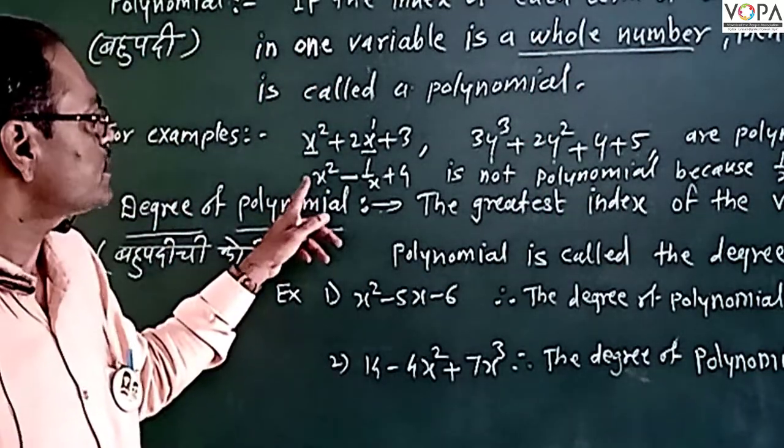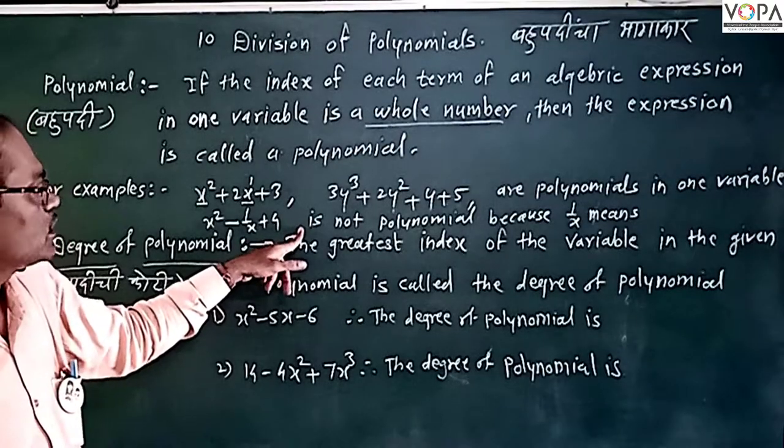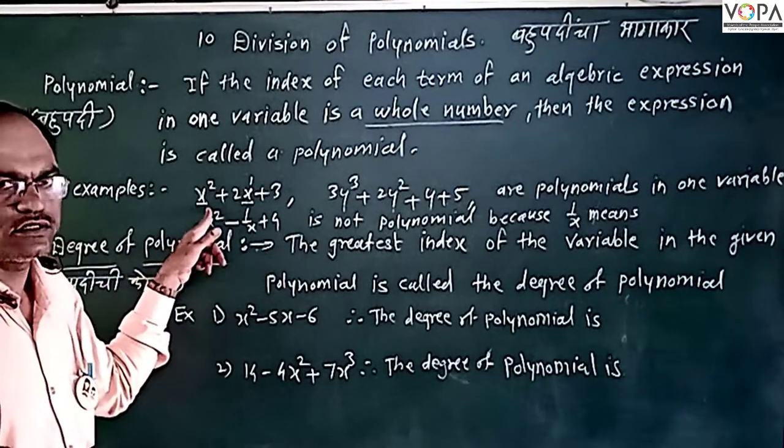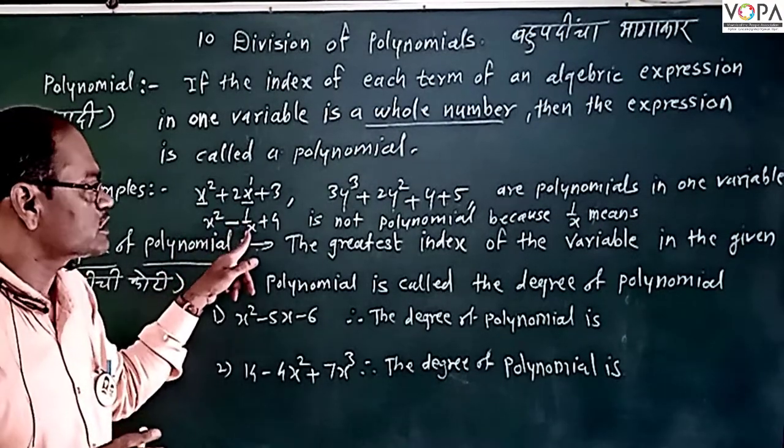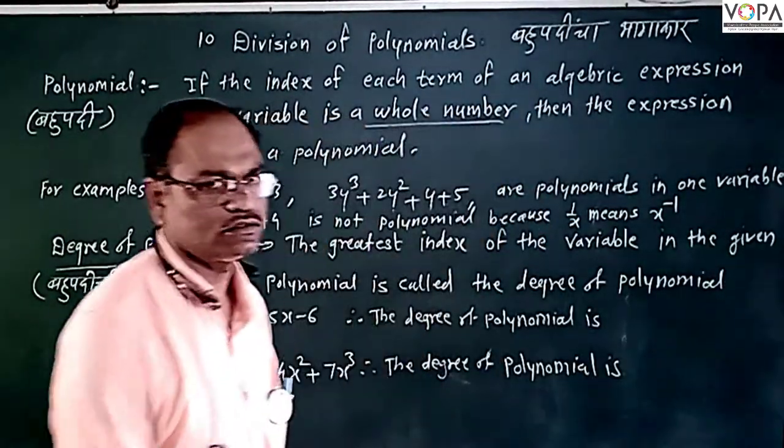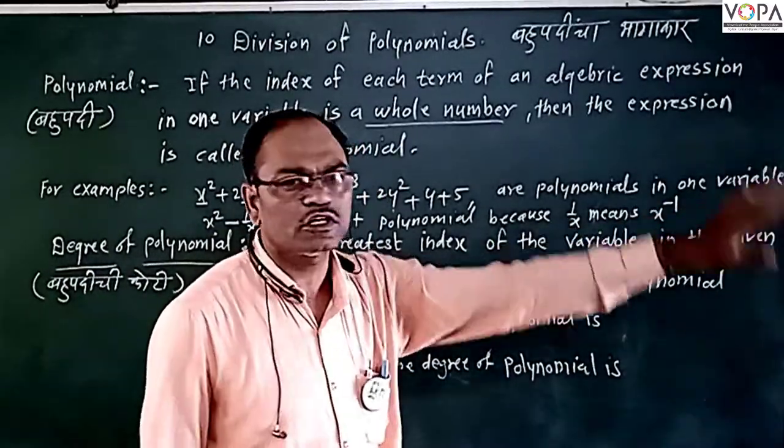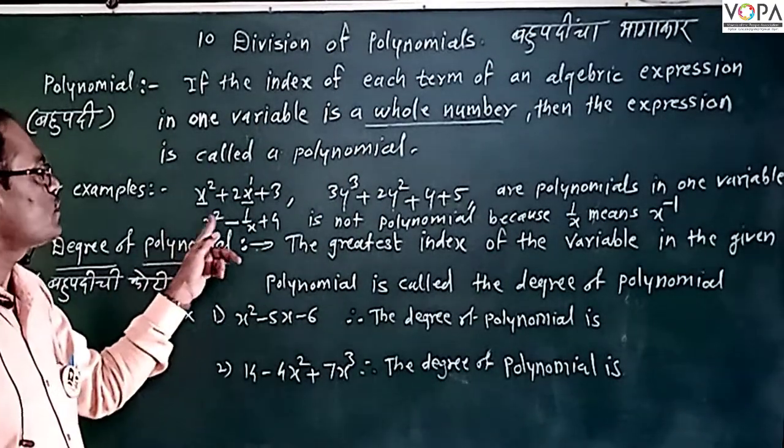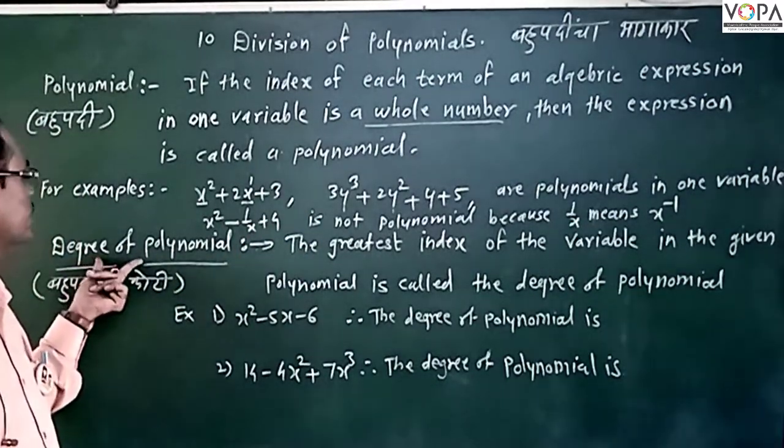This example, x square minus 1 upon x plus 4, is not a polynomial. Because 1 upon x means x to the minus 1, and minus 1 is not a whole number, therefore it is not a polynomial.